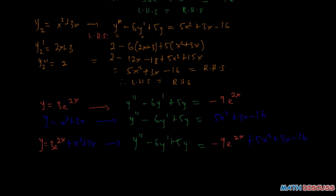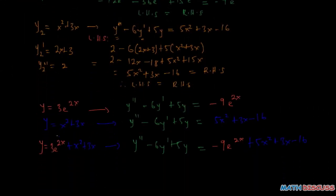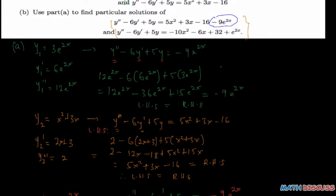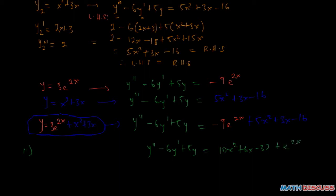That is what the superposition principle gives us, and we've been able to find the particular solution from there. So that implies that y equals 3e to the power 2x plus x squared plus 3x is the particular solution of that differential equation. For the next part, we want to find a particular solution when the right hand side is 10x squared plus 6x minus 32 plus e to the power 2x. So we want to find a particular solution of y'' minus 6y' plus 5y equals 10x squared plus 6x minus 32 plus e to the power 2x.